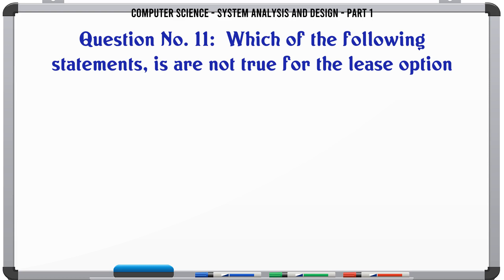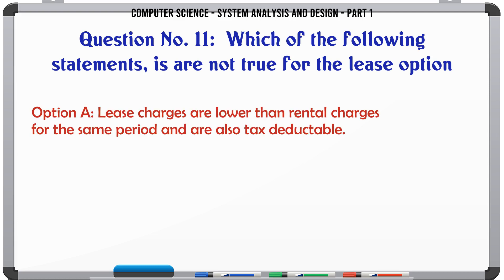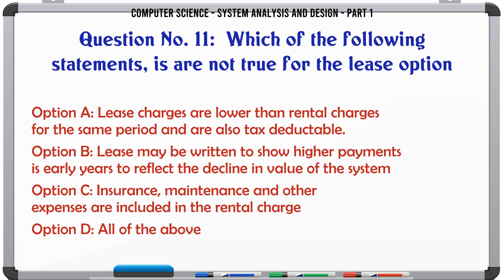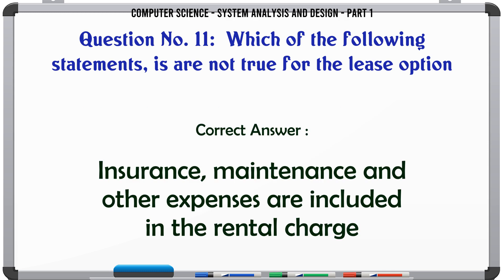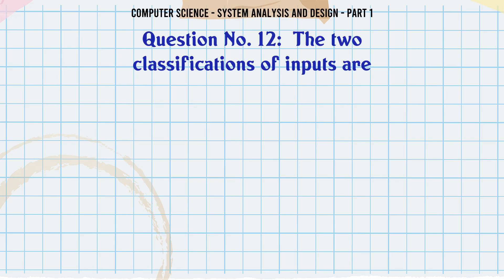Which of the following statements is/are not true for the lease option? A. Lease charges are lower than rental charges for the same period and are also tax deductible. B. Lease may be written to show higher payments in early years to reflect the decline in value of the system. C. Insurance, maintenance and other expenses are included in the rental charge. D. All of the above. The correct answer is: Insurance, maintenance and other expenses are included in the rental charge.